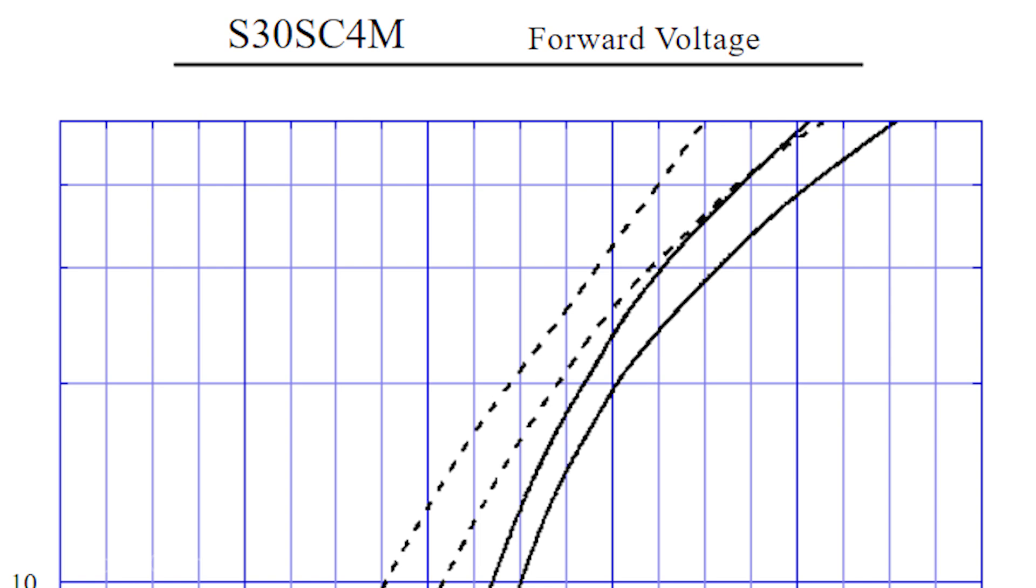We want to know what losses we will have at maximum current. At a current of 14 amperes, the voltage drop on the diode will be 0.8 volts. This is quite a lot.